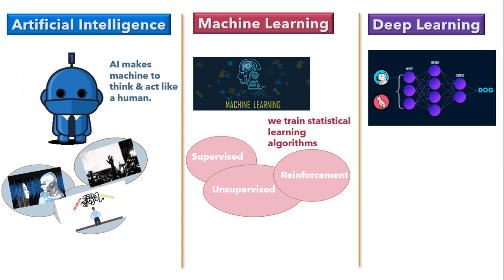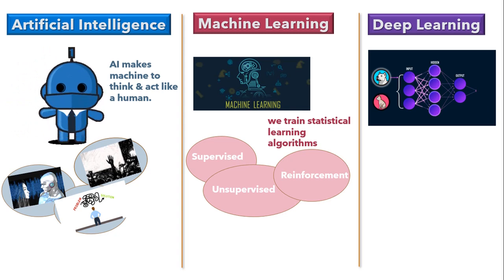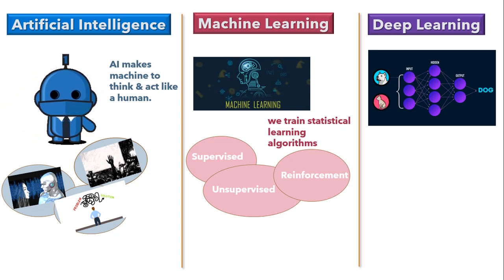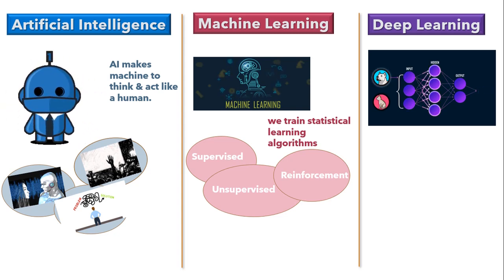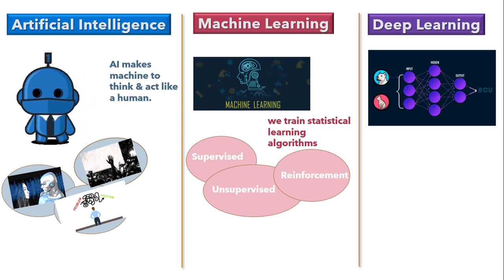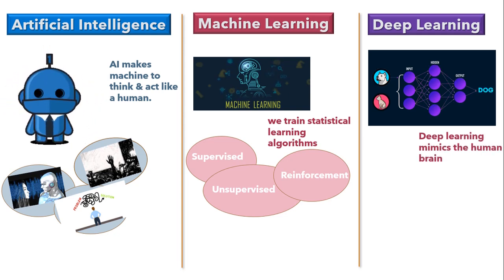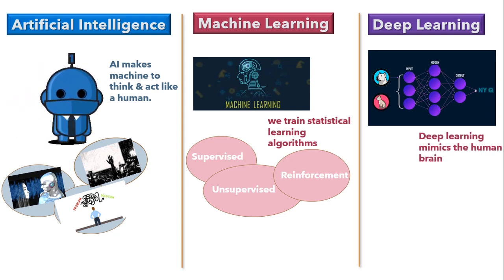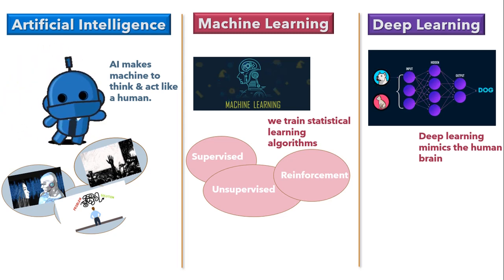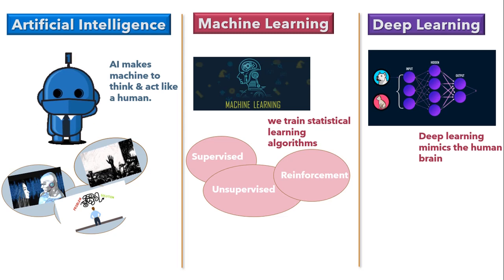Now coming to deep learning — deep learning is again a subset of machine learning. Just like we use our brain to identify patterns and classify various types of information, deep learning algorithms can be taught to accomplish the same task for machines. The main idea behind deep learning is to mimic the human brain: whenever we receive new information, the brain tries to compare it to a known item before making sense of it, which is the same concept deep learning algorithms employ.